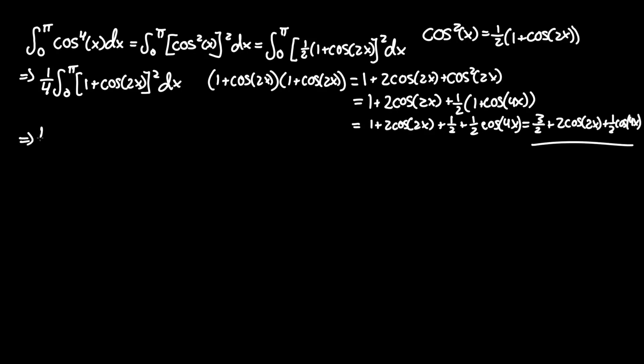We plug that back into the integral. Don't forget the 1/4 constant. Now we have 1/4 times the integral from 0 to π of (3/2 + 2cos(2x) + 1/2 cos(4x)) dx.